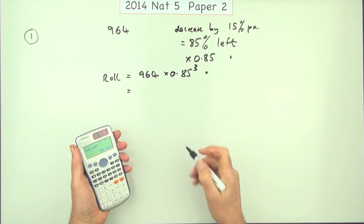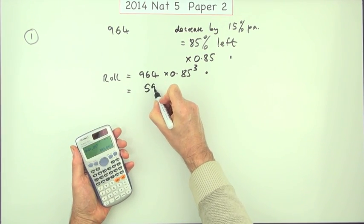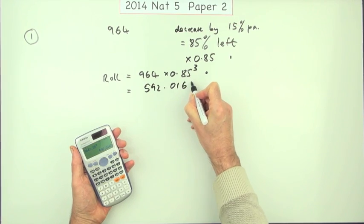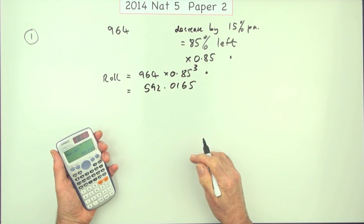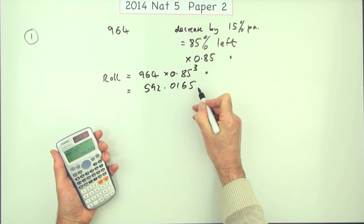Putting that into your calculator gives you 592.0165. That doesn't give you the third mark yet, because you have to round it to the nearest 10.